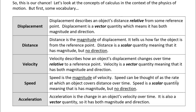Acceleration is also a vector quantity — it has a magnitude and direction. Notice that velocity is how displacement is changing over time, and acceleration is how velocity is changing over time. So the derivative of your displacement is velocity, and the derivative of velocity is acceleration, which means that acceleration is actually the second derivative of displacement.